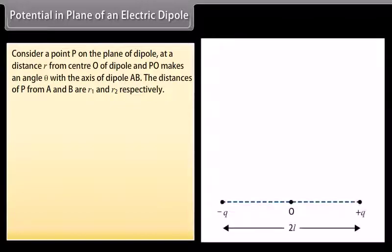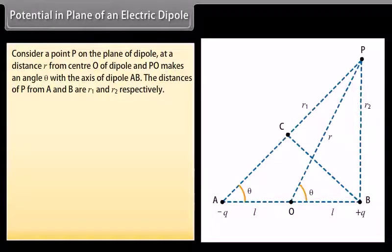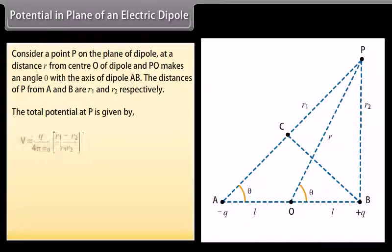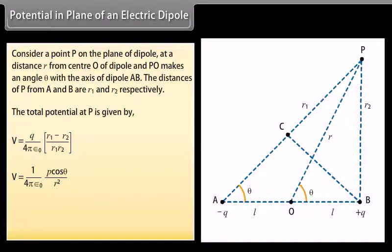Potential in the plane of an electric dipole: Consider a point P on the plane of the dipole at a distance R from center O, where PO makes an angle theta with the axis of the dipole AB. The distances of P from the two charges are R1 and R2 respectively. The total potential at P is given by V equals 1 upon 4π ε₀ multiplied by P cos theta upon R squared. This is a generalized expression for the potential of a short dipole at any point on the plane of the dipole.